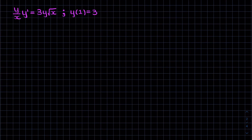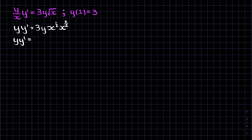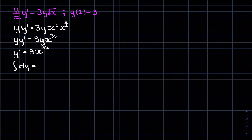For this example we can start by multiplying both sides by x, and that'll give us y·y prime equals 3y. Now the square root of x is x to the half, and if we multiply by x it allows us to rewrite this as 3y·x. Now we can divide both sides by y and that will give us y prime equals 3x to the 3/2. Now we can take the integral of both sides with respect to x and we'll get the integral of dy equals the integral of 3x to the 3/2 dx.